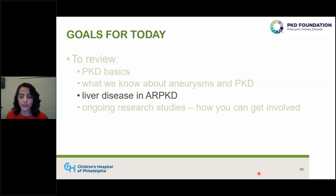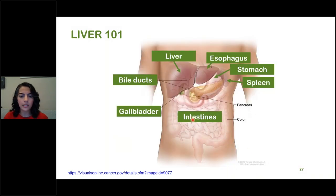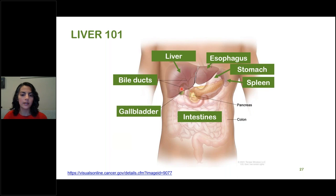Now let's move on to liver disease. The liver is located in the right upper part of the abdomen. Its main function is to aid with digesting food and metabolizing everything, turning food into the building blocks of our body. The liver produces bile that helps digest food; that bile flows through small bile ducts within the liver and collects into a larger bile duct that connects to the intestines. The gallbladder collects that bile. The liver also absorbs everything from the intestines — blood flow from the stomach, spleen, and intestines passes through the liver before being returned to the rest of the body.